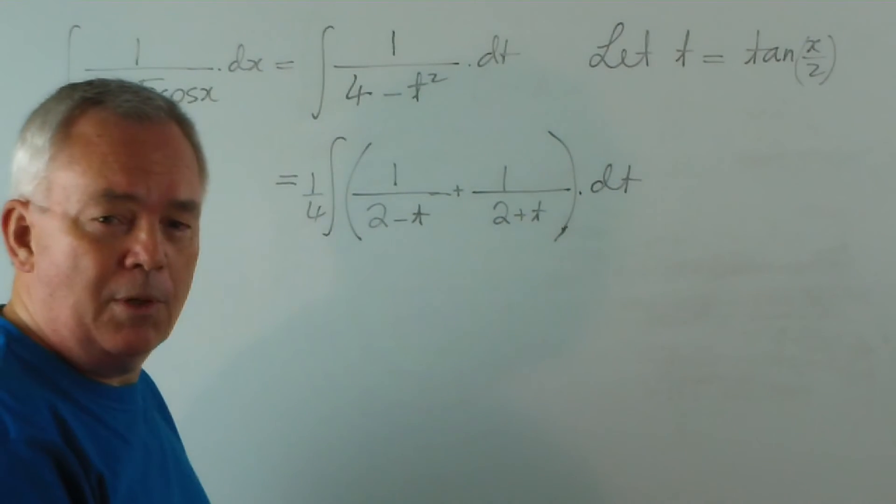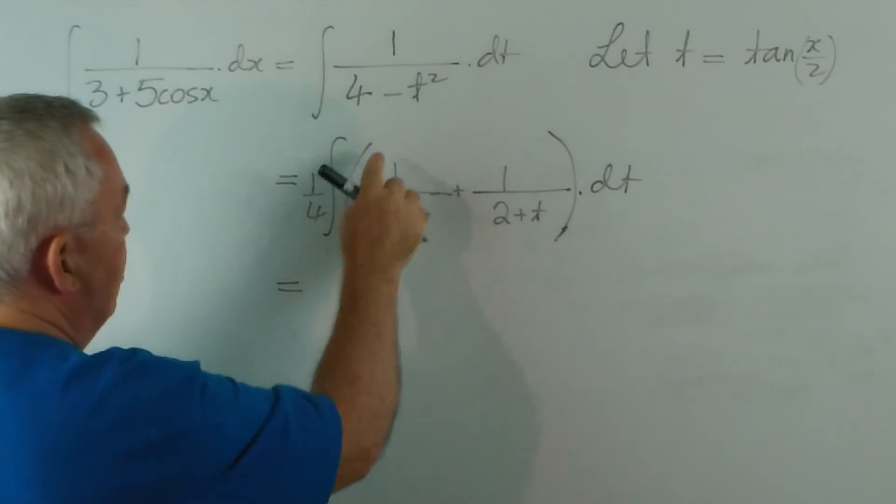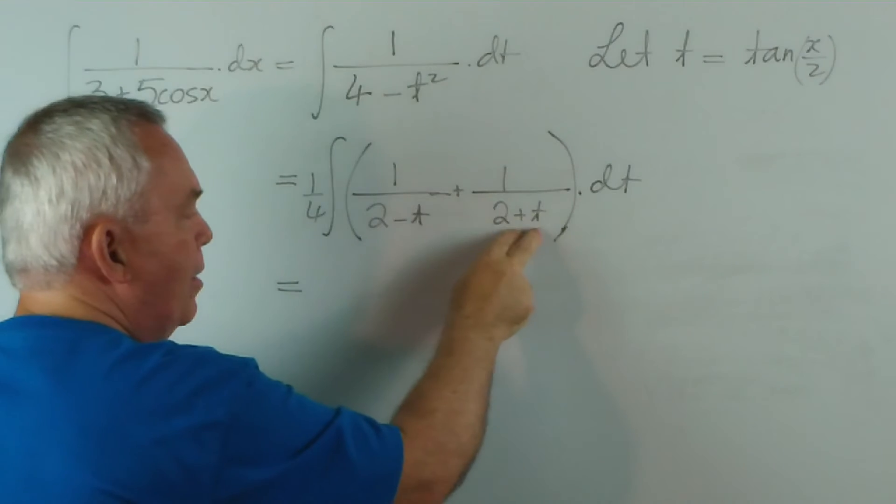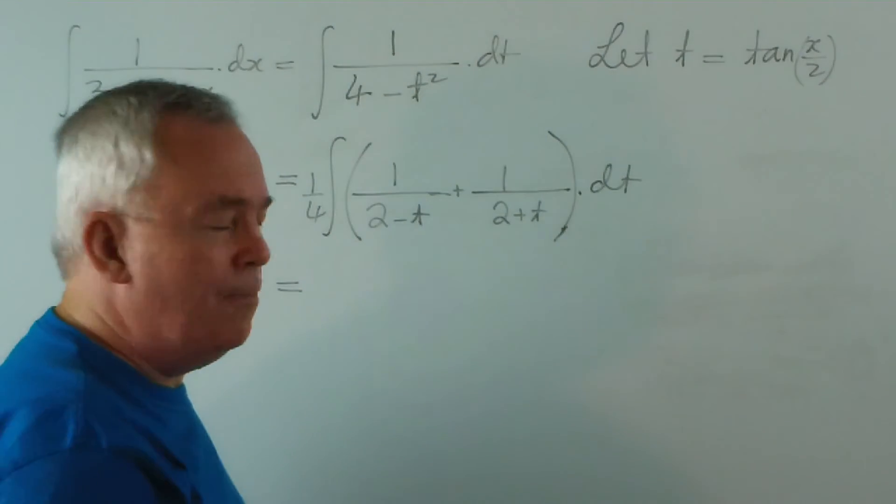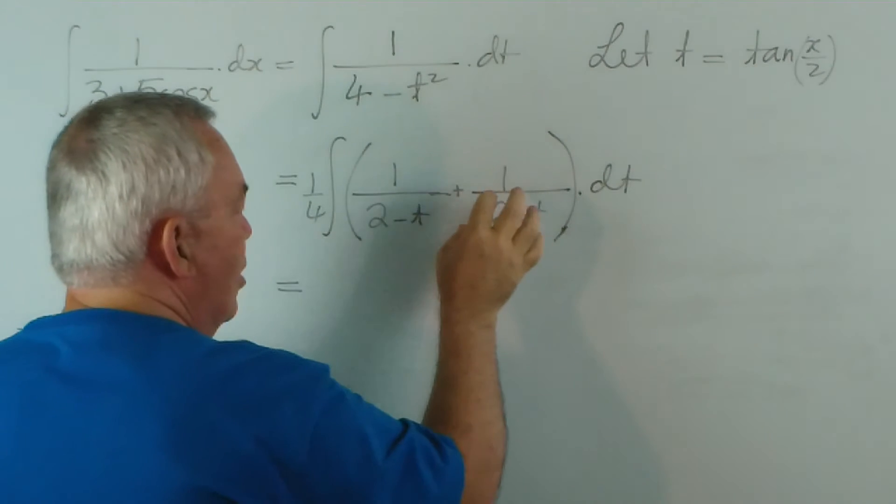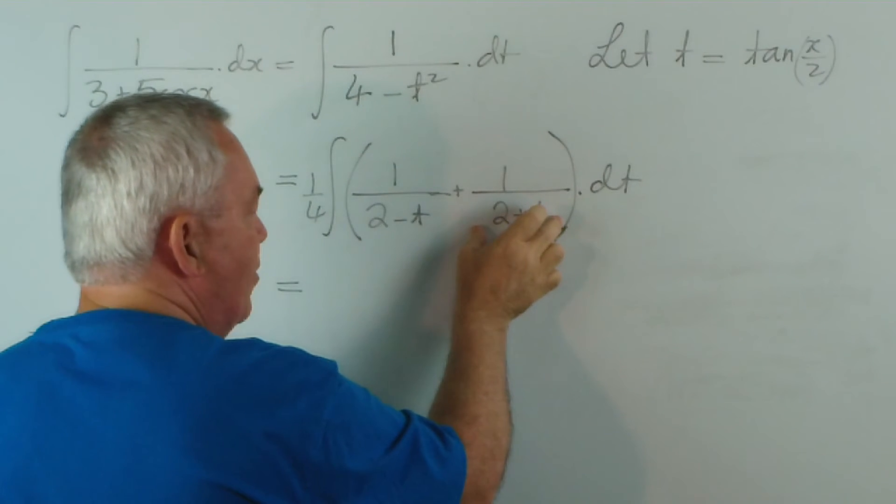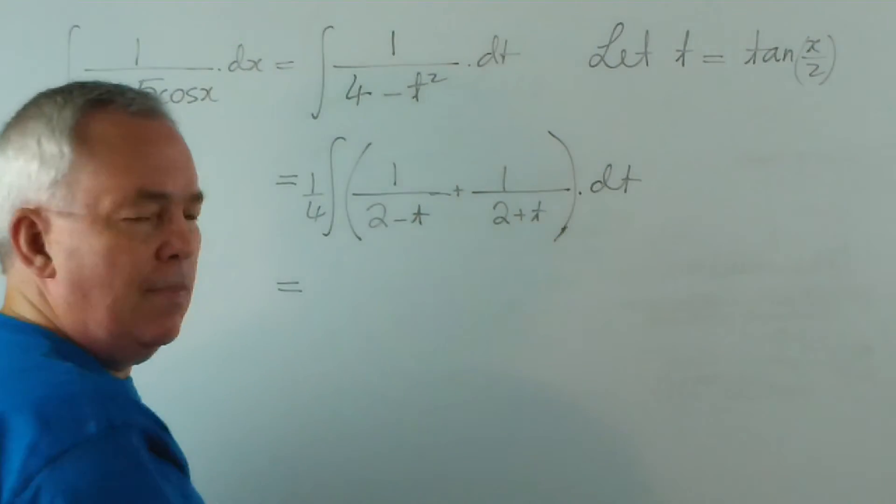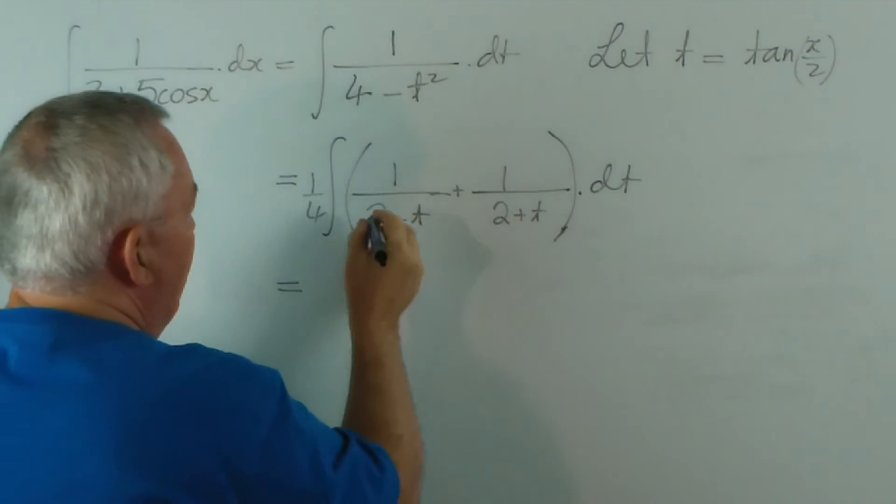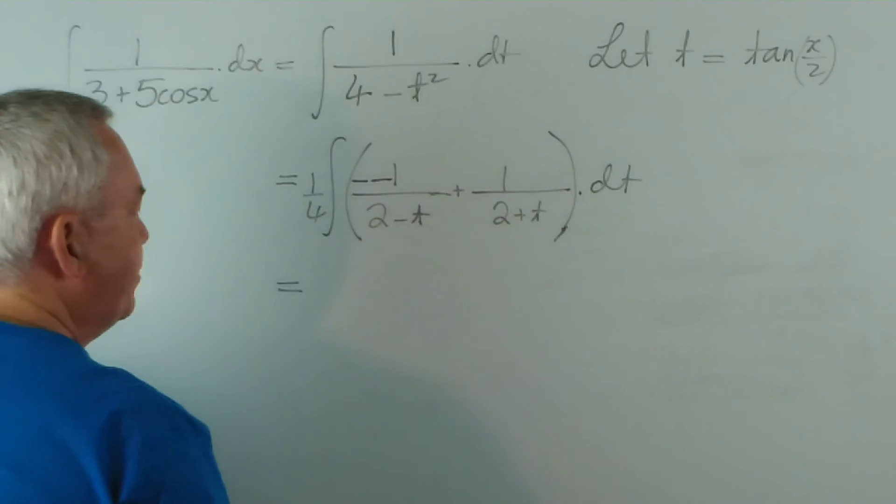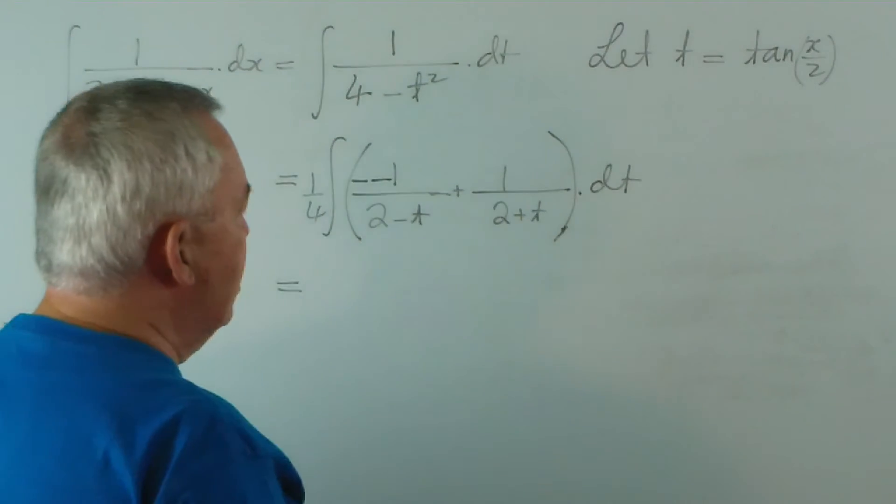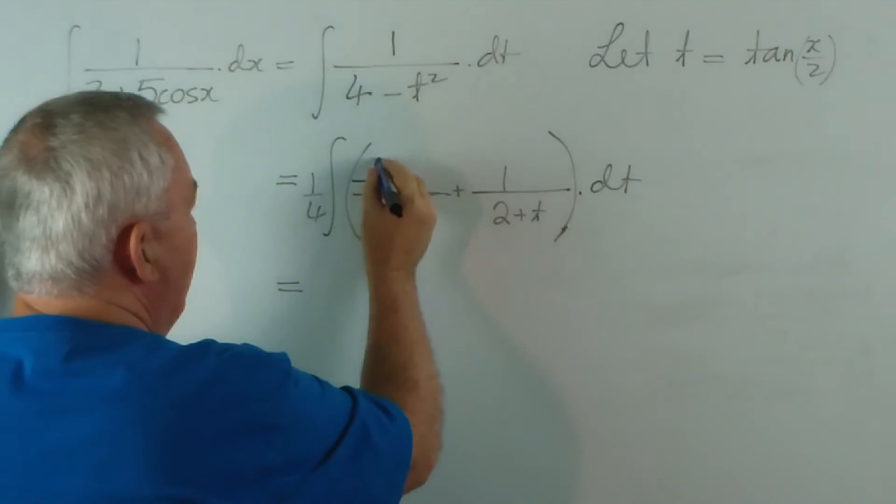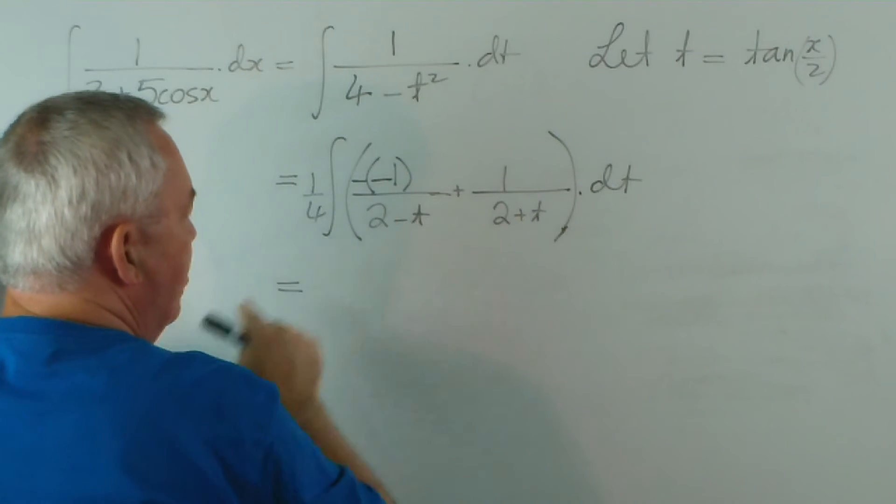This is a little bit different from the previous integral, in which we had a positive sign here. Now, I hope you recognize that both of these look like logarithmic structures. So let's do a quick test. The derivative of 2 plus t is, in fact, 1. So that's perfect. The derivative of 2 minus t is negative 1. So I'm going to put 2 minus signs here. There are other ways of doing this, but this will be enough. And that negative 1 is the derivative of this.